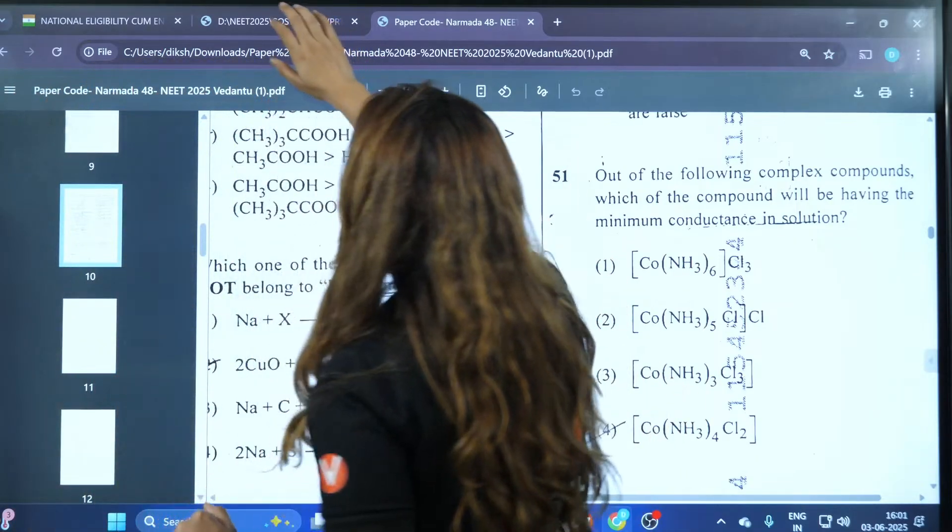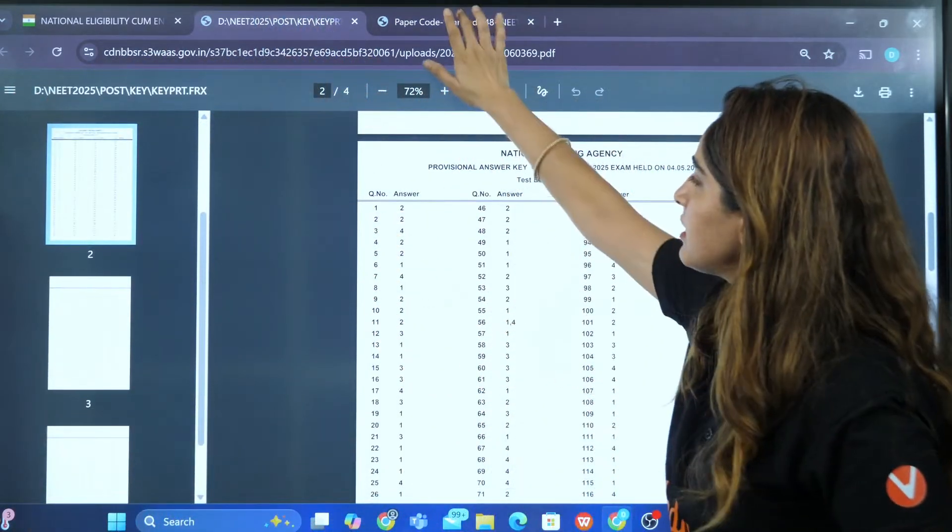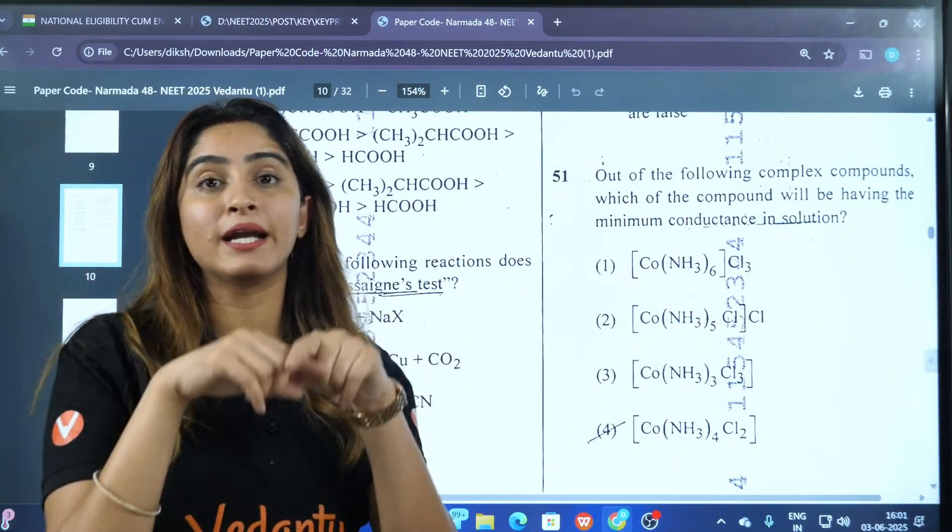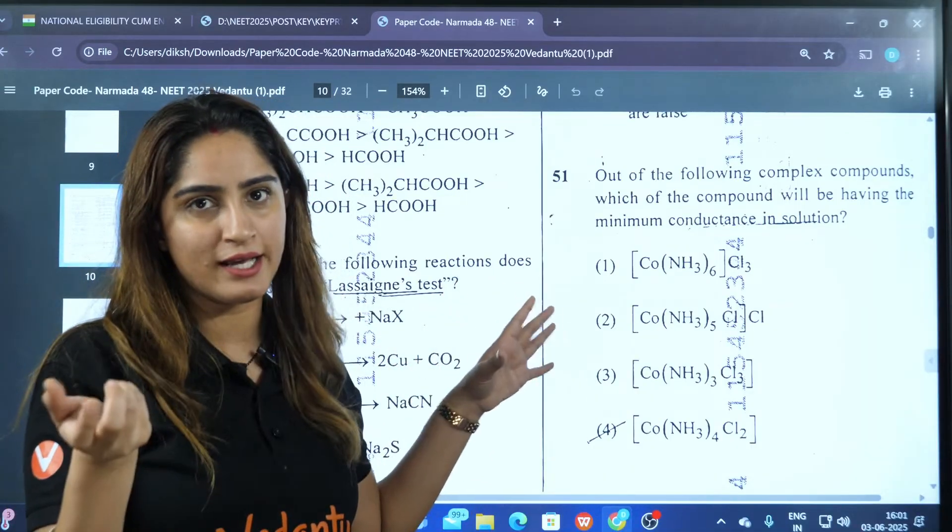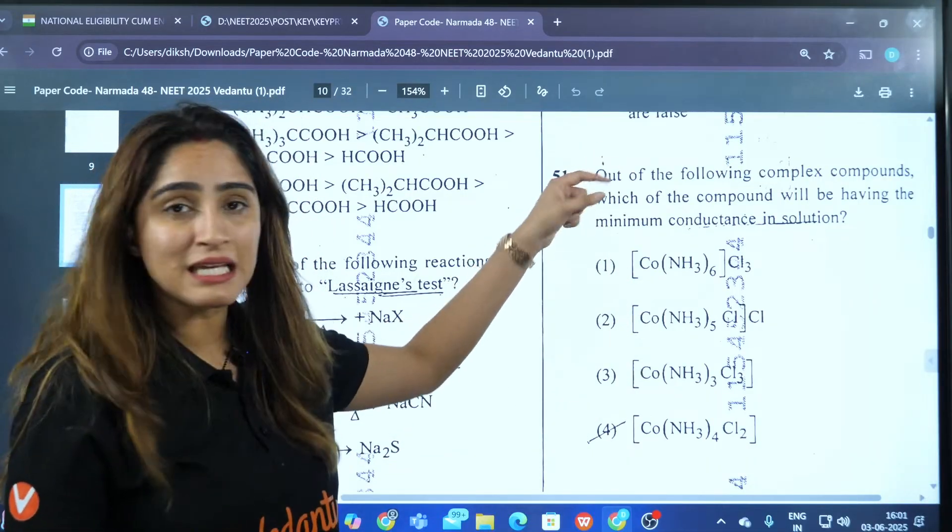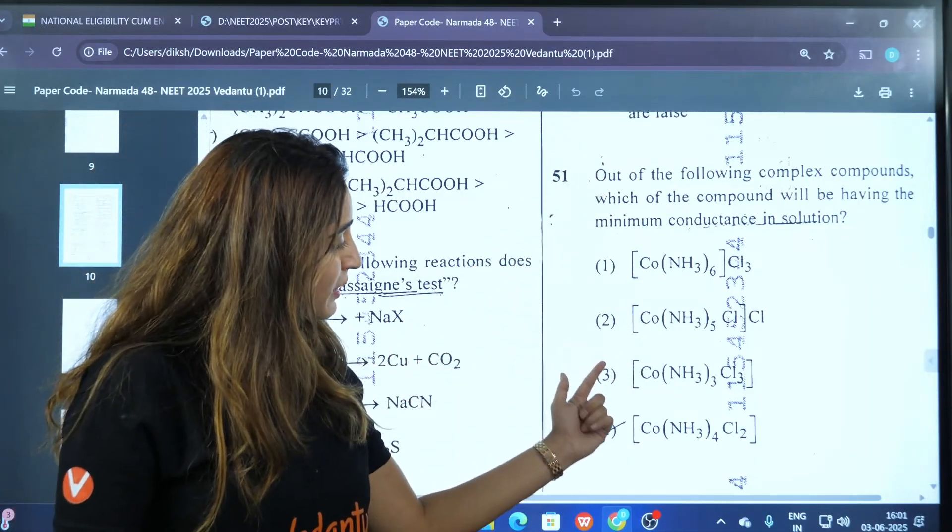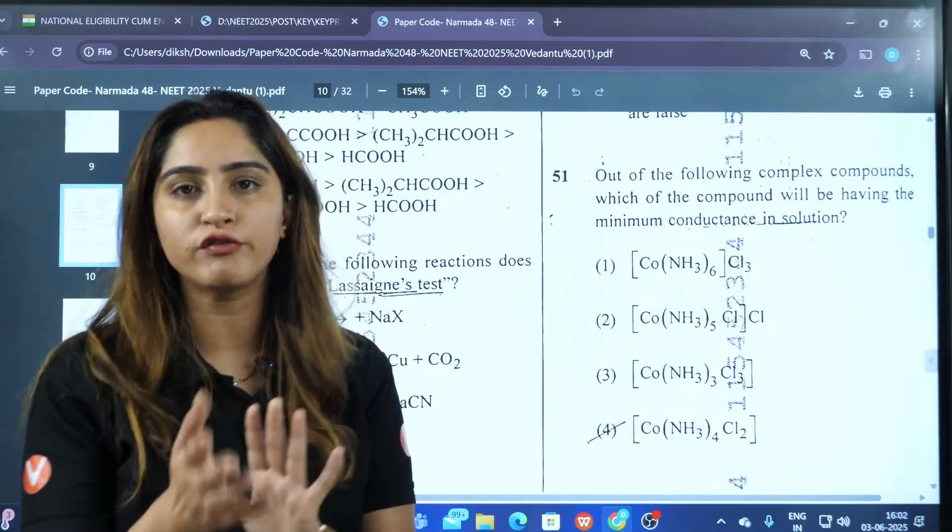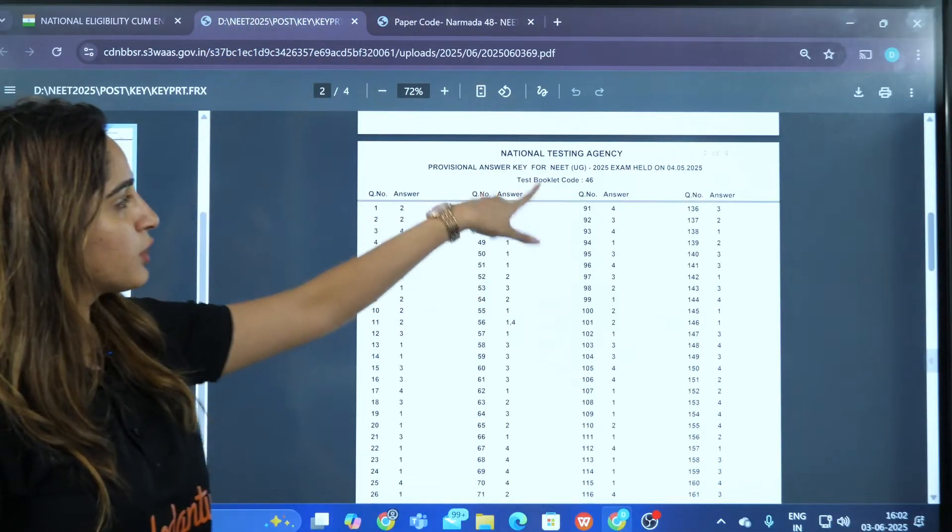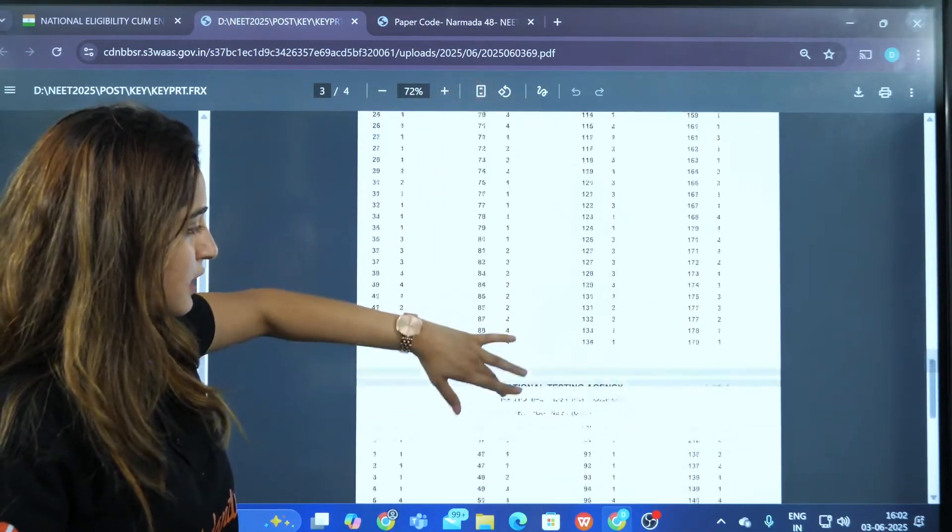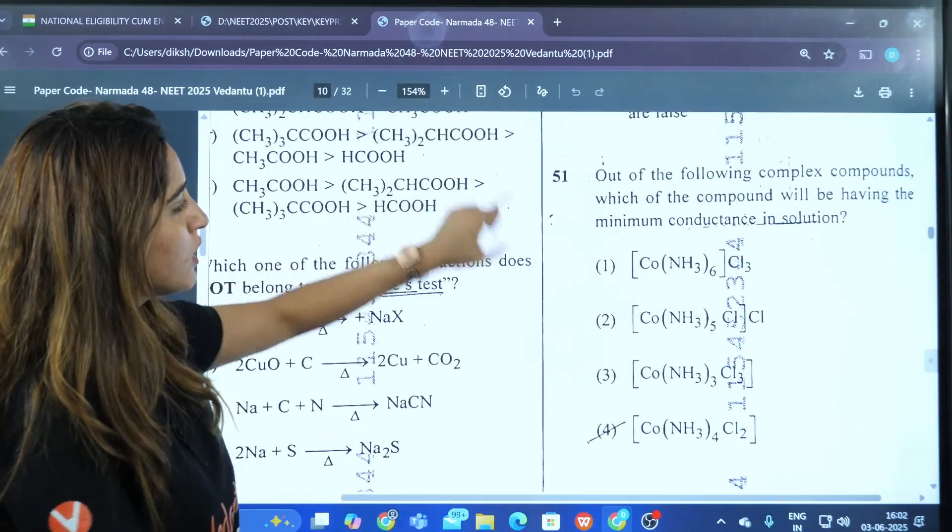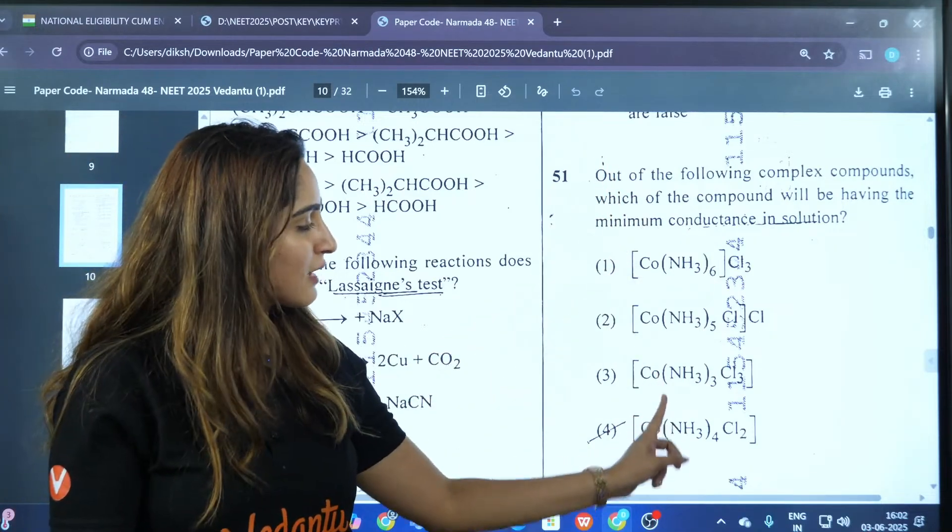So I'll just repeat it. This is the question in booklet 48. Depending upon your booklet, you will have different question numbers. The answer will be third or fourth, both of them are the correct answers here. NTA has given booklet 48, question number 51, that is three and four. So two options are the correct answer.